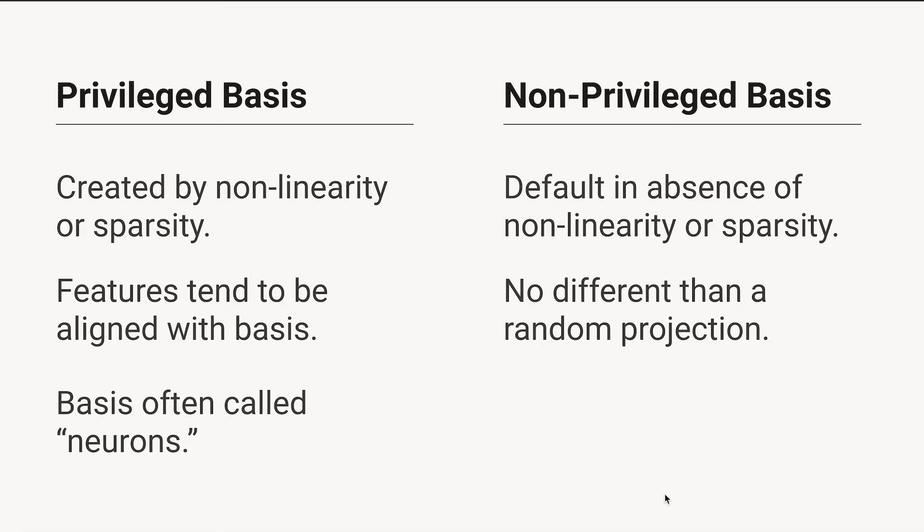A privileged basis is usually created by having a non-linearity in a neural network, especially ReLU. Because it's such a sharp non-linearity and because it creates sparsity, it tends to be especially good at aligning meaningful features with the basis dimensions of your representation. But you can also end up with a privileged basis if you have some regularizer that's enforcing sparsity in your activations.